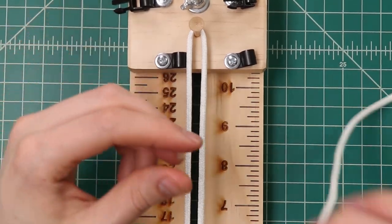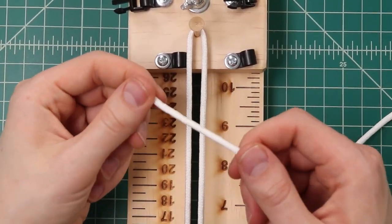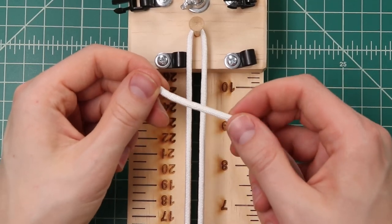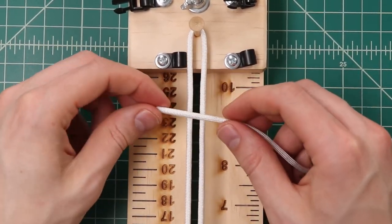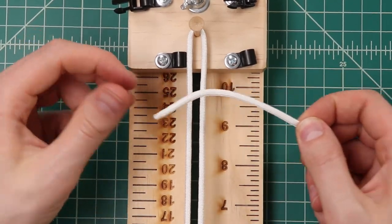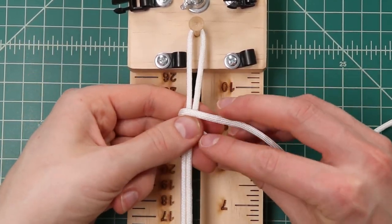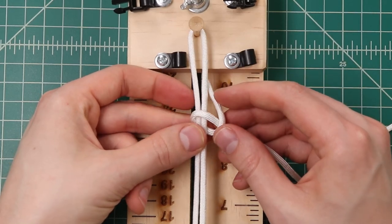And then at that top end we're going to take one end of our five foot section of white and just cow hitch it onto the cord. So we'll take it around both strands, lay this over the top, underneath, over the top like that.